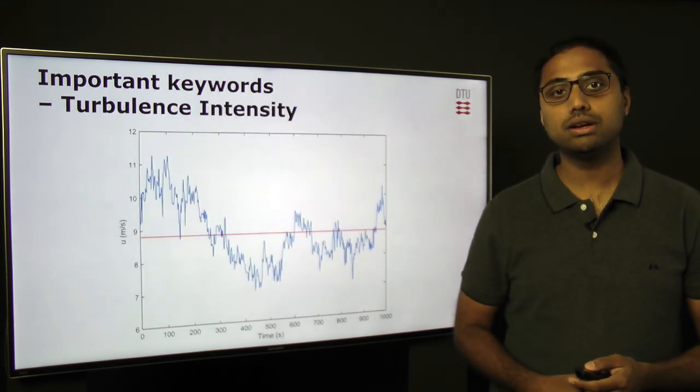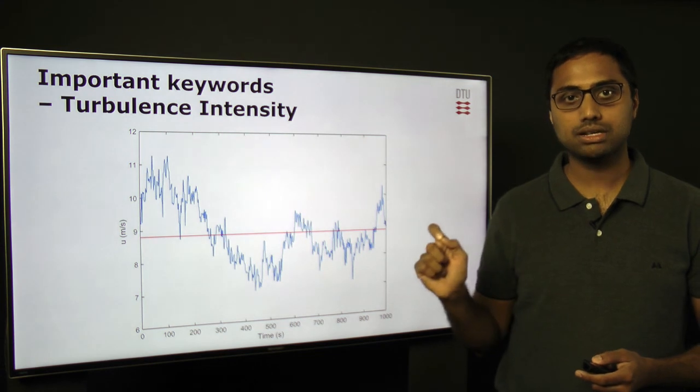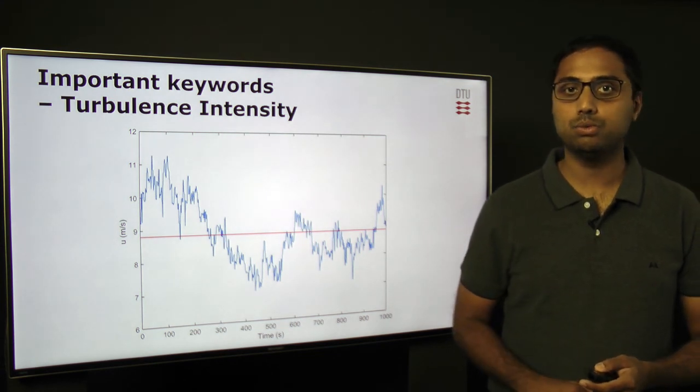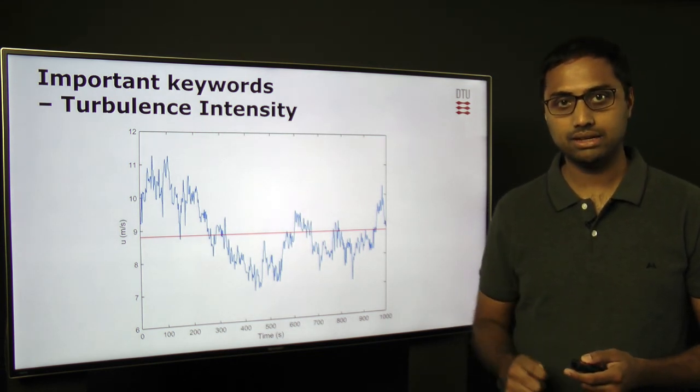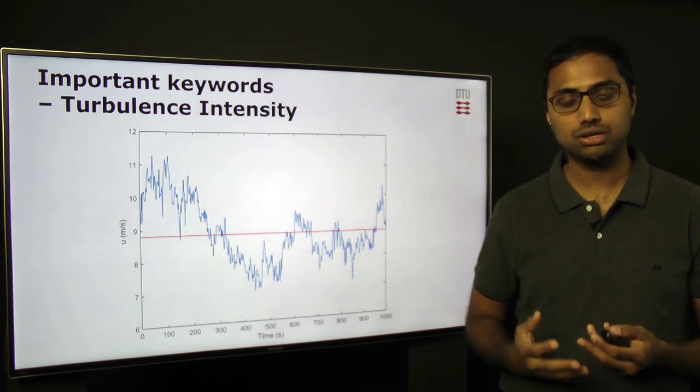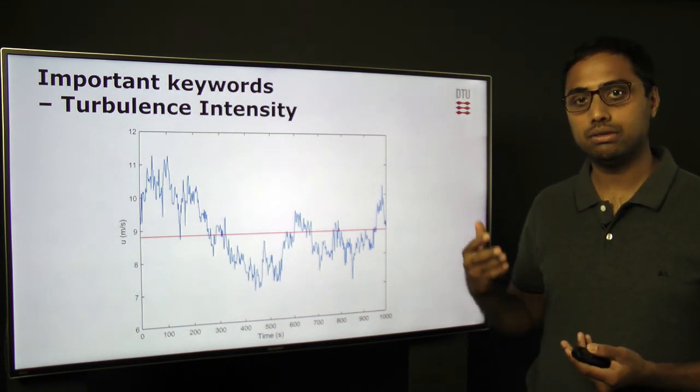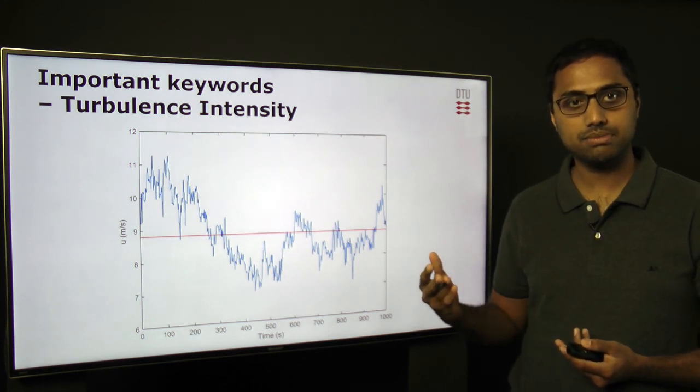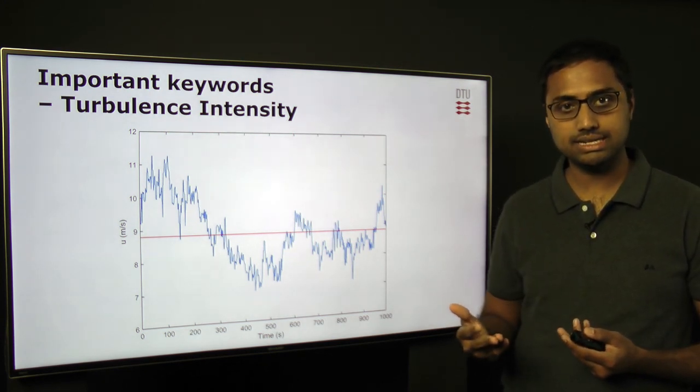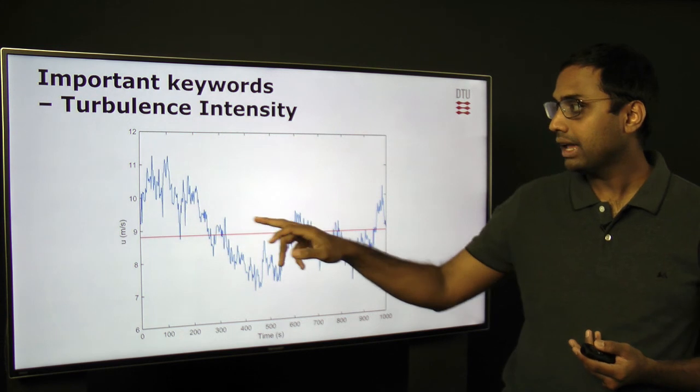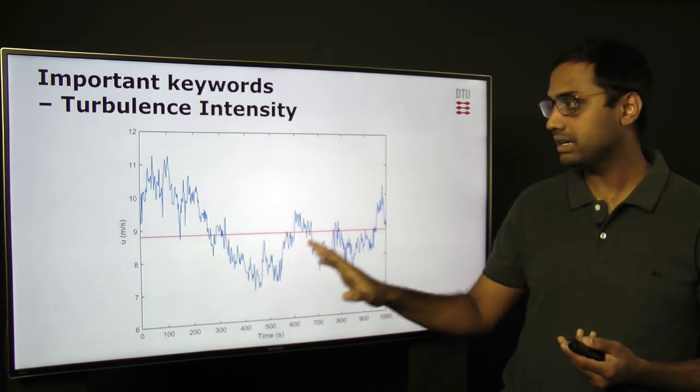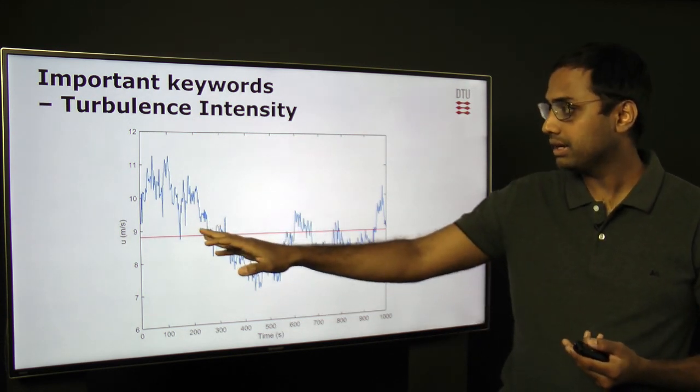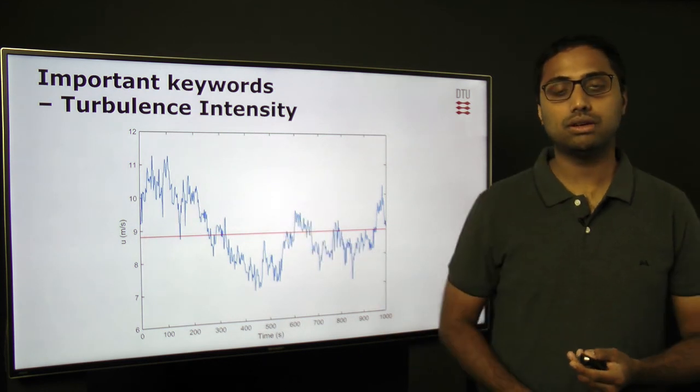Another important keyword, and probably the most frequently used keyword in wind energy, is turbulence intensity. This is a statistic which is used to quantify turbulence. What information is required to estimate sample turbulence intensity is the mean wind speed and the standard deviation. Standard deviation is simply computed using the fluctuations of the time series.